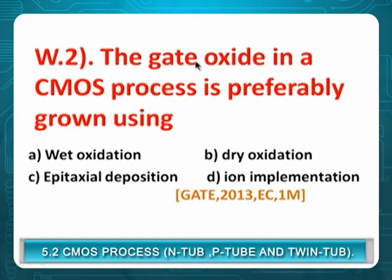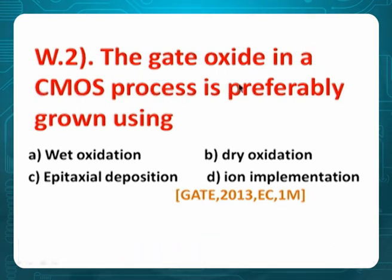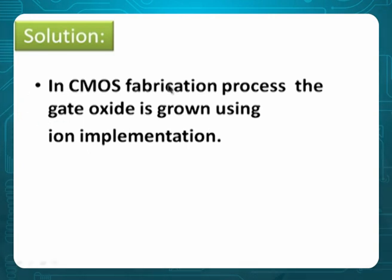Question 2 (GATE 2013, EC, 1 mark): Gate oxide in a CMOS process is preferably grown using: wet oxide, dry oxide, epitaxial deposition, or ion implantation? In CMOS fabrication, gate oxide is grown using dry oxidation. The ions act as a dielectric/insulating oxide layer. Therefore the answer is option D.